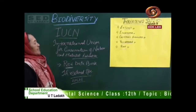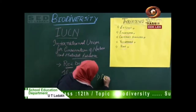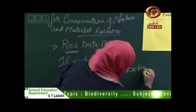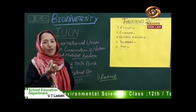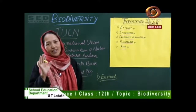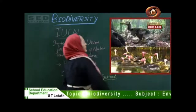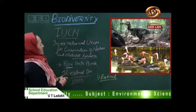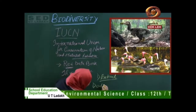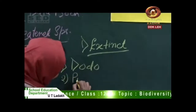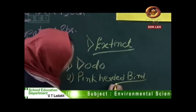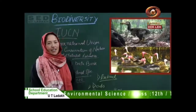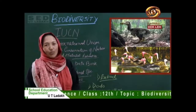The first category is Extinct. Extinct species are those whose last members have disappeared from the earth. For example, the first bird is the dodo bird and the second is the pink-headed duck. Both these birds are already extinct. Now we can only see their pictures in books or museums.